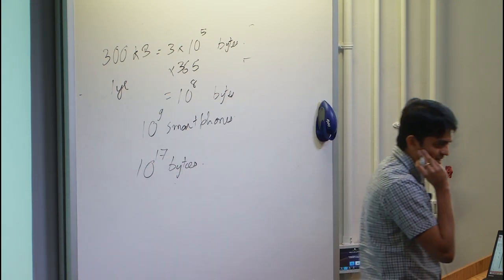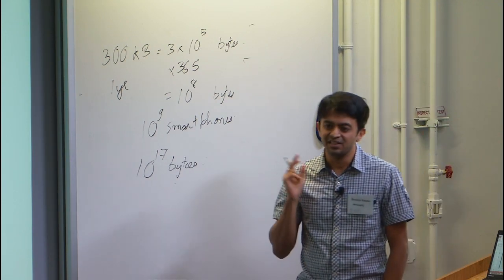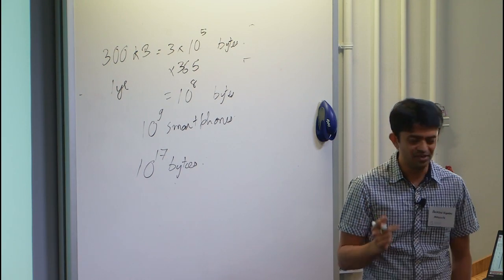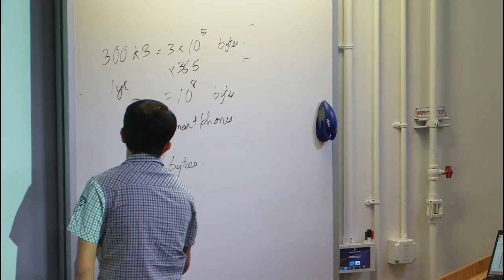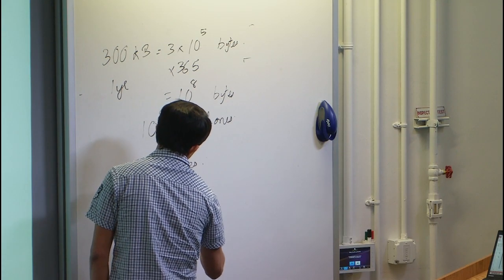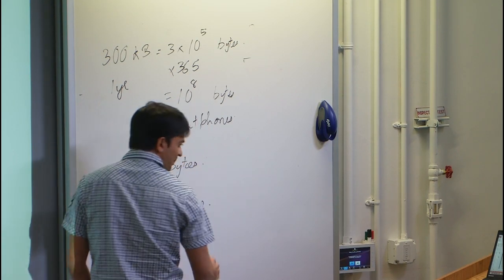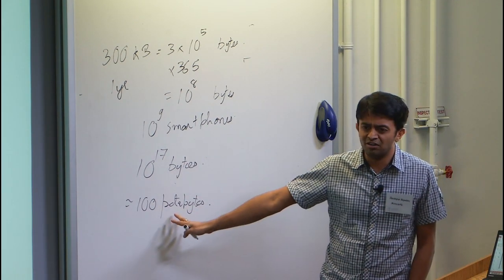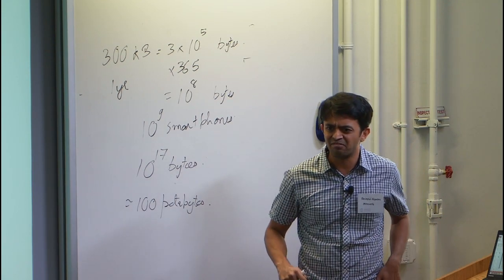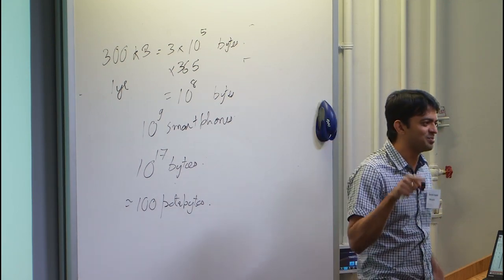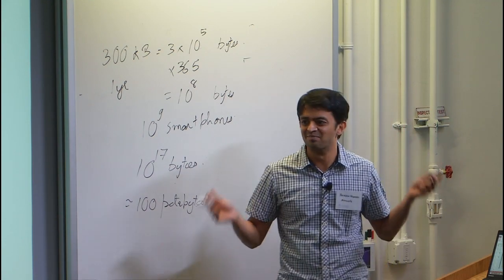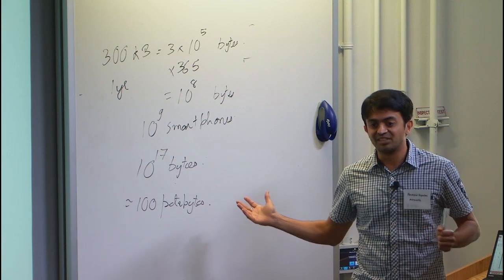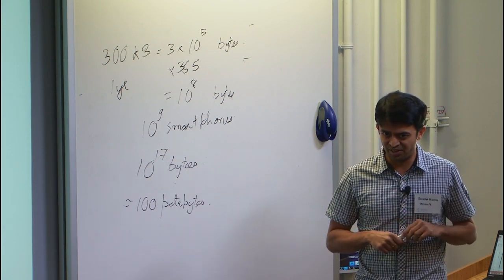We all know what a gigabyte is — that's 10^9. Then comes a terabyte, which is 10^12. Then comes a petabyte, which is 10^15. This is about 100 petabytes of data. It's a huge number, and by no means — eventually all of this finds its way onto the cloud somewhere. When I actually managed to switch my phone on and connect it to my computer, there are like three competing programs that want to back it up onto their own cloud. So all of this data eventually finds its way out to the cloud.